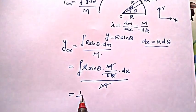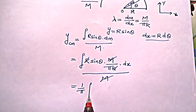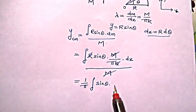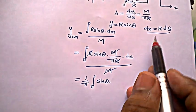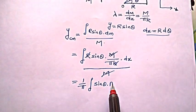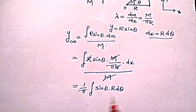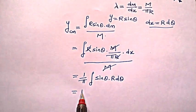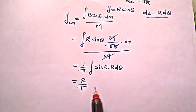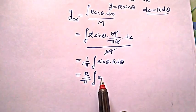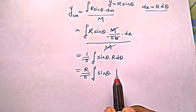So I have 1 by π outside and I have integral sin θ into dx, which is again r dθ. So r also comes out; I have r by π into integration of sin θ dθ.